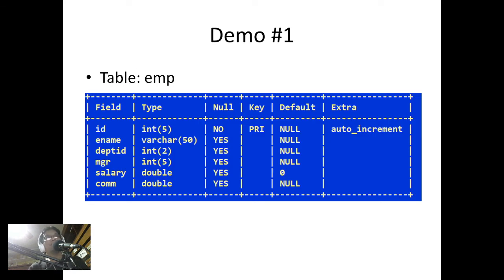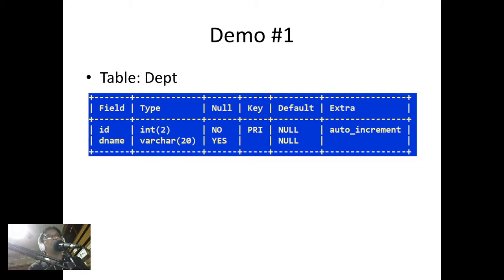Here is the structure of the M table. It has the following fields: ID, E-name, depth ID, MGR, salary, and commission. Take note of this because we'll be using this table again in the next demo. The depth ID is an example of a foreign key, because we'll be relating this key to the primary key of the other table. The depth table has two columns: ID, which is the primary key, and name, the name of the department. The ID of the depth table will be related to the depth ID of the M table.